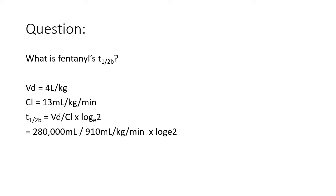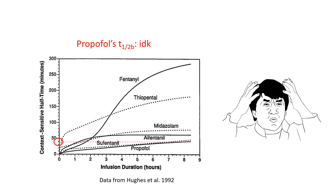In Peck and Hill, fentanyl's volume of distribution is said to be 4 litres per kilogram and its clearance 13 millilitres per kilogram per minute. If we put those numbers into the equations that we know, we calculate that fentanyl's T-half-beta is 213 minutes. Peck and Hill states that propofol's terminal elimination half-life is between 5 and 12 hours, yet we can see that the context-sensitive halftime has barely reached 50 minutes after 9 hours of infusion. I think it's best to pick some popular numbers to memorise, but keep in mind that for very slowly equilibrating drugs with very large volumes of distribution, estimates will vary.